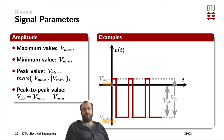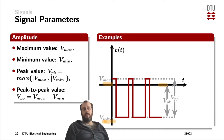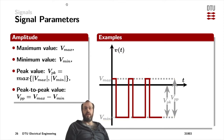Those two are easy. The peak value of the signal in this case is the absolute of the minimum, because that's the one which is furthest away from the time axis. So the peak value is defined over here, and the peak-to-peak value is the difference of the maximum to the minimum.